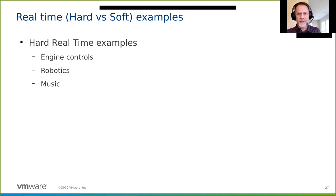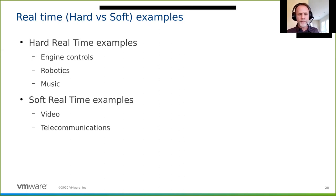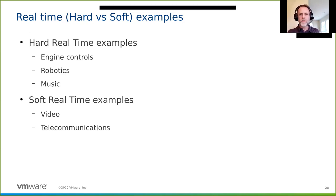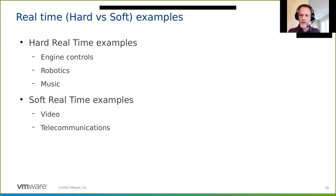Believe it or not, music also requires hard real-time. Some soft real-time examples: video streaming like Netflix—it's soft real-time, it can miss an outlier. If you miss a few frames it gets annoying, but it doesn't fail the system. Telecommunications is also soft real-time. But music is different—and it was surprising for me when I first started working on the PREEMPT_RT patch that musicians were among our first testers.